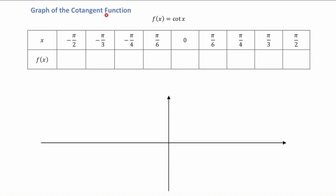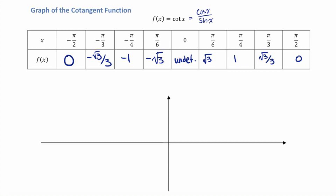Graphs of the cotangent function. f(x) equals cotangent of x. Please fill in these table values. You need to be memorizing how to quickly fill in these values. Remember, cotangent is just cosine of x over sine of x. So take your cosine value at the given angle and divide it by the sine value. We have one undefined spot at 0, since cotangent(0) equals cosine(0)/sine(0) = 1/0, which is undefined.